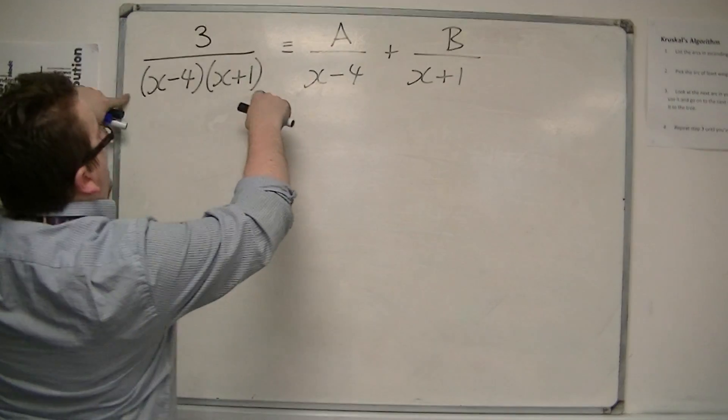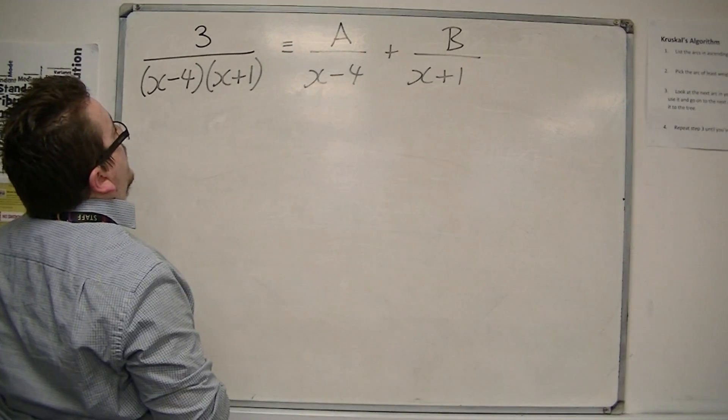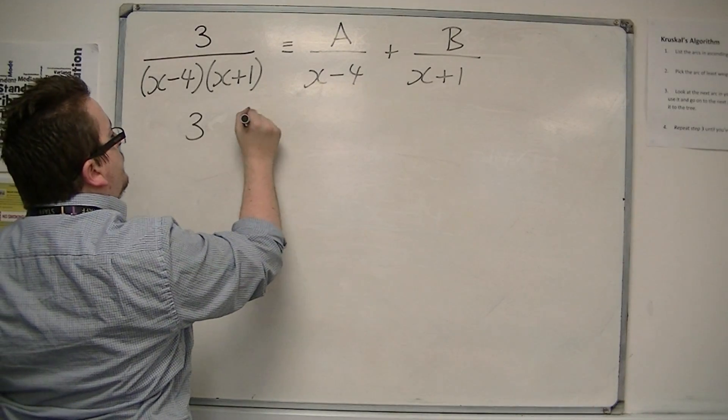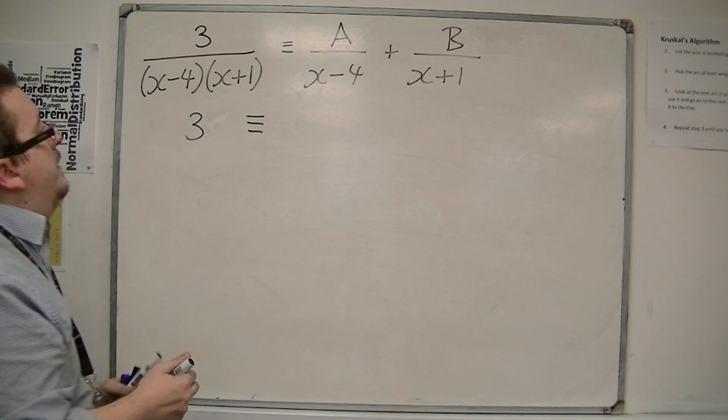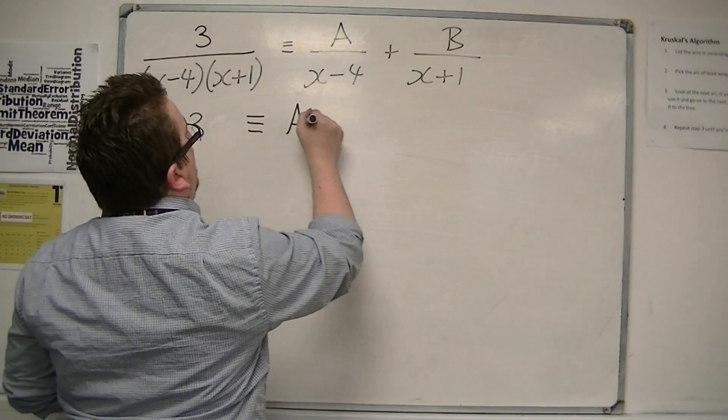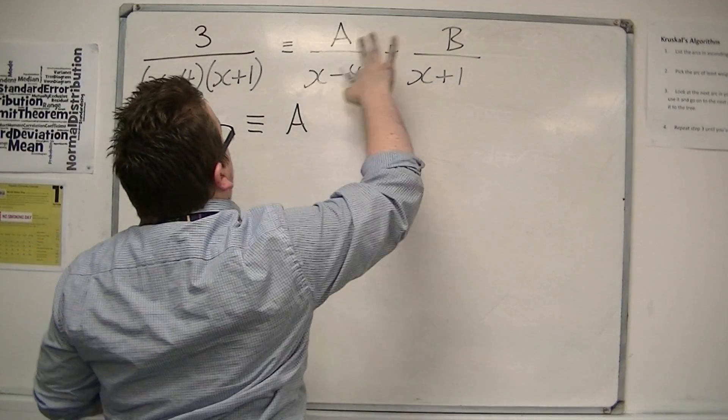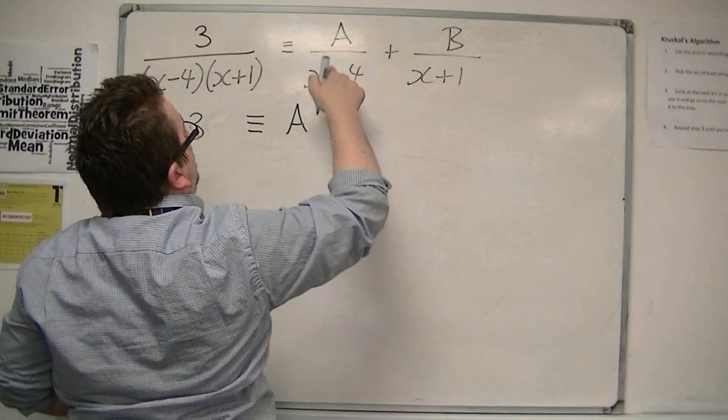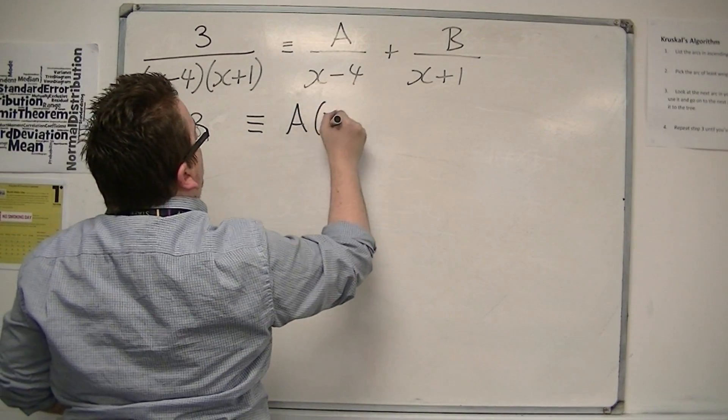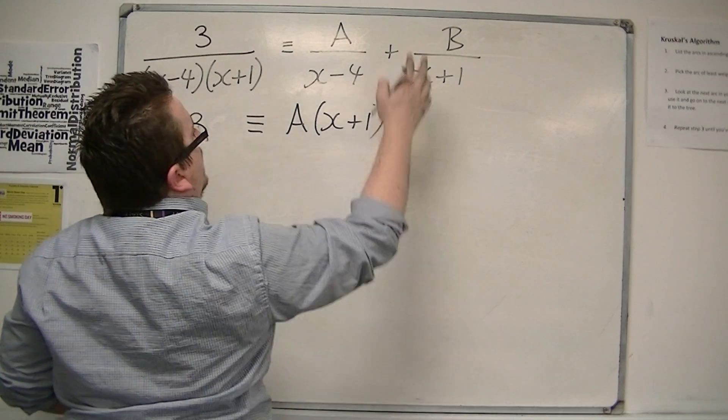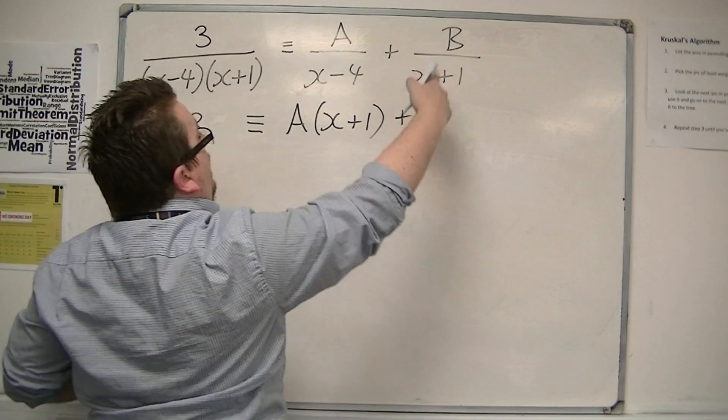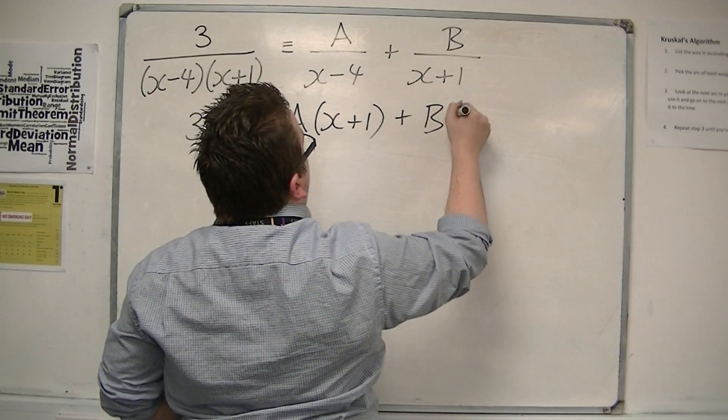If I multiply both sides by both brackets, then on the left hand side I'm going to get 3. And on the right hand side, when I multiply this fraction by both x minus 4 and x plus 1, the x minus 4's will cancel, and I'll just get left with x plus 1. For this fraction, the x plus 1's will cancel, and I'll just be left with x minus 4.